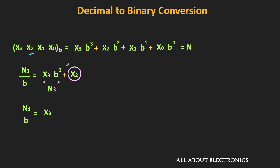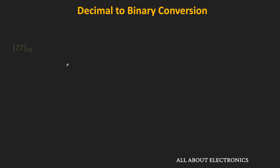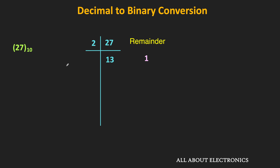Let's take one example to understand how it works. We want to find the binary equivalent of the decimal number 27. First, let's divide 27 by the factor of 2. The quotient will be equal to 13, and the remainder is equal to 1. Once again, if we divide 13 by the factor of 2, then the quotient will be equal to 6, and the remainder is equal to 1.